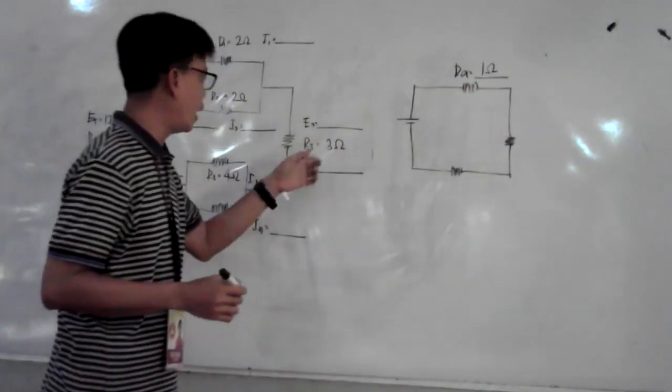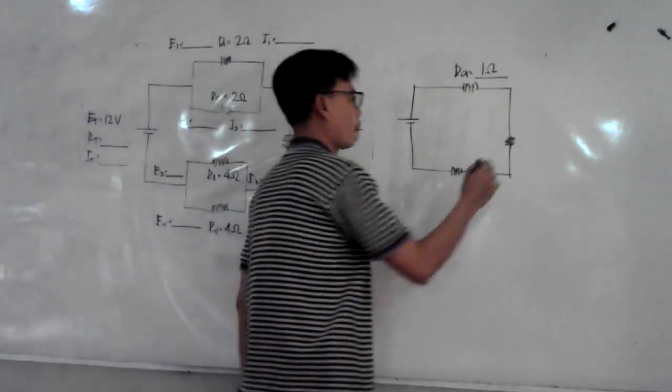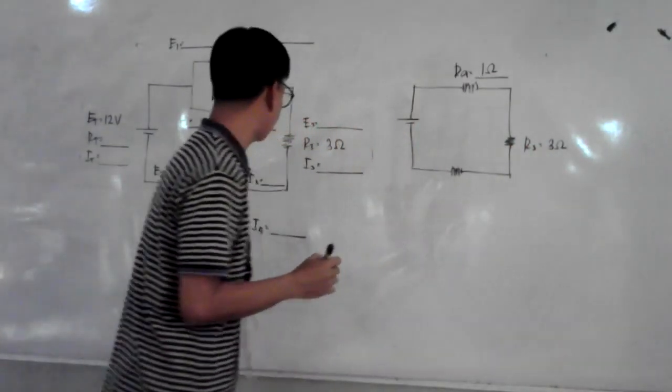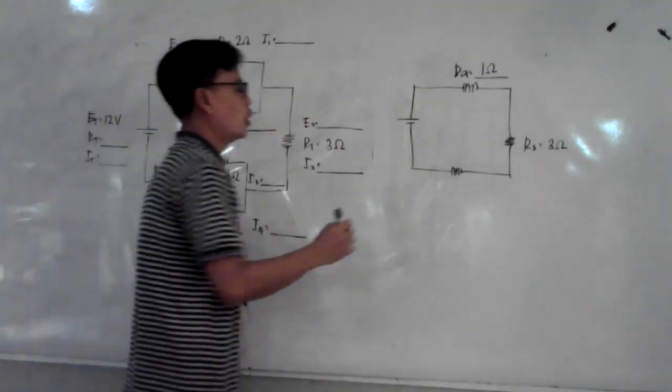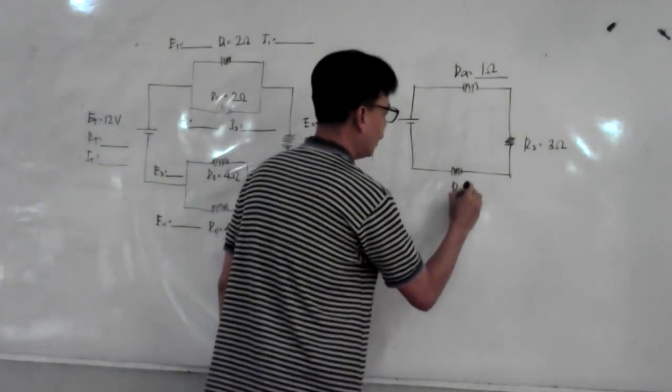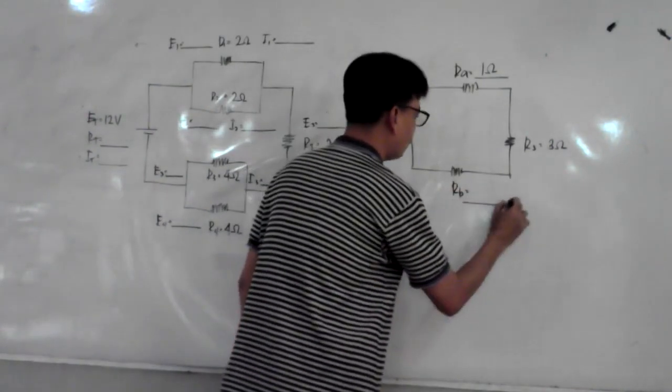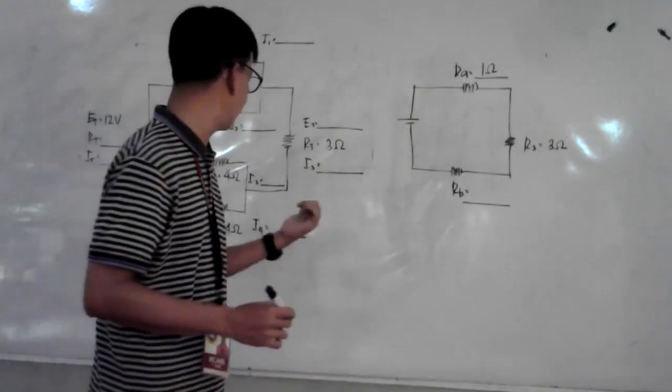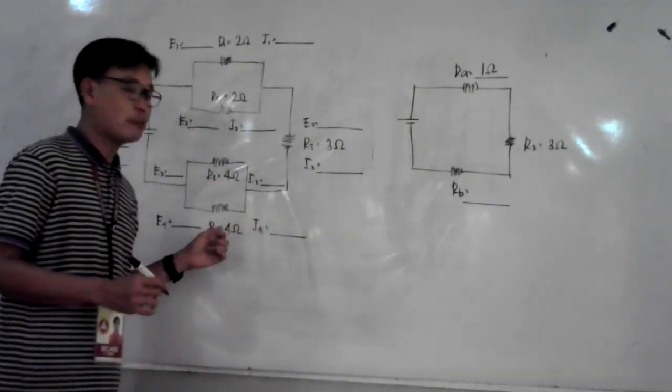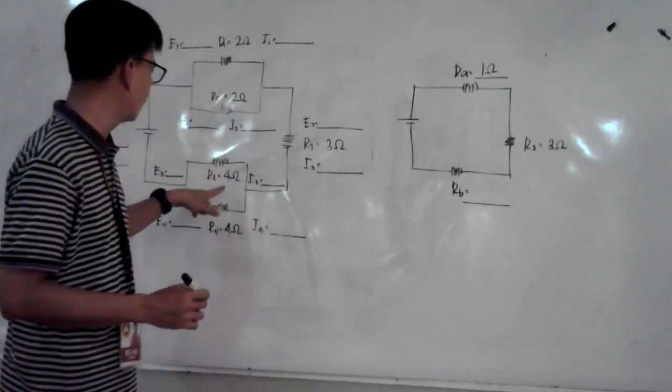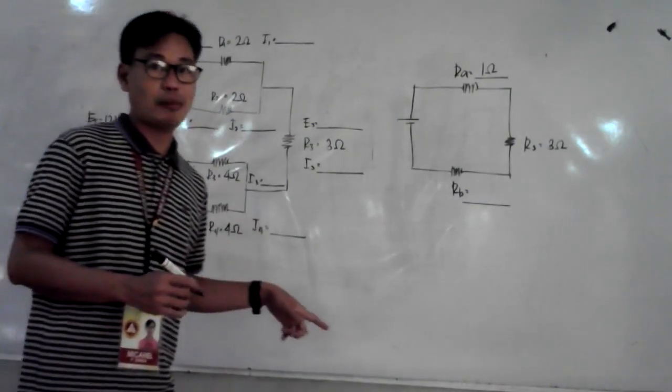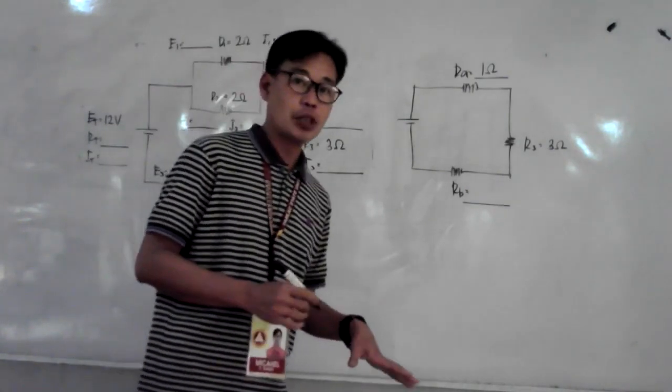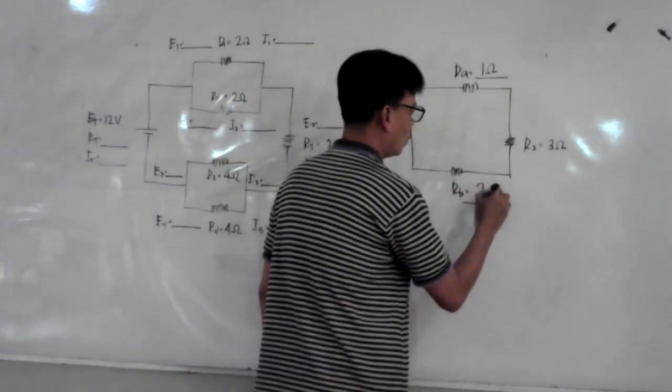The value of R3 is 3 ohms. For R3 and R4, we combine them to get Rb. What's the value of Rb? Again, two resistors in parallel: R3 times R4 divided by R3 plus R4. That is 4 times 4 divided by 4 plus 4. 4 times 4 is 16, divided by 8, which equals 2 ohms.